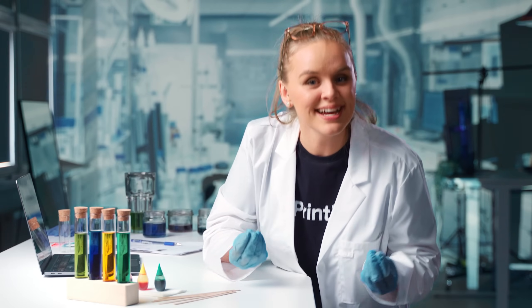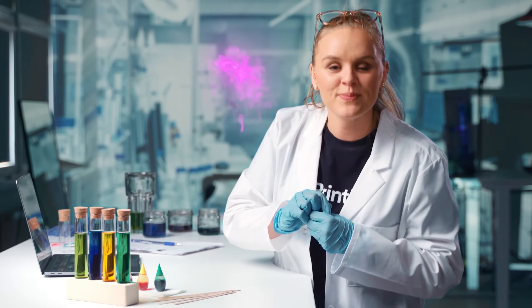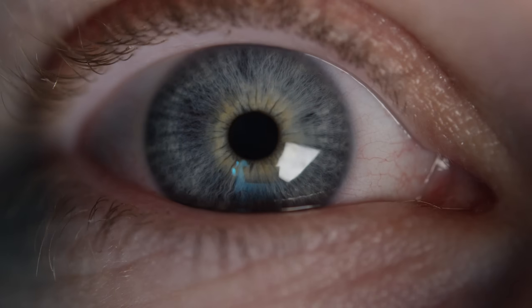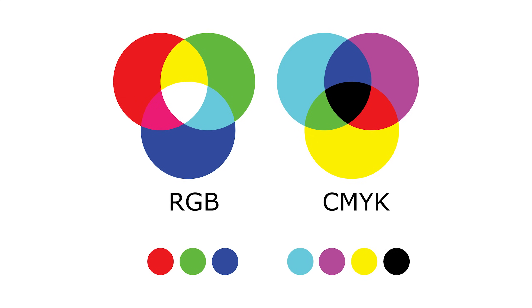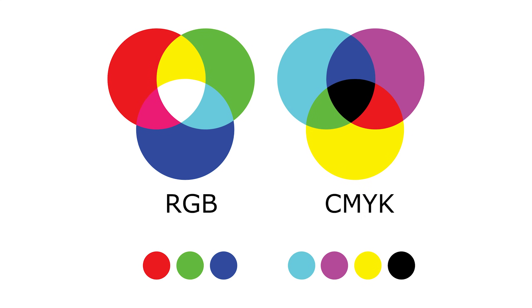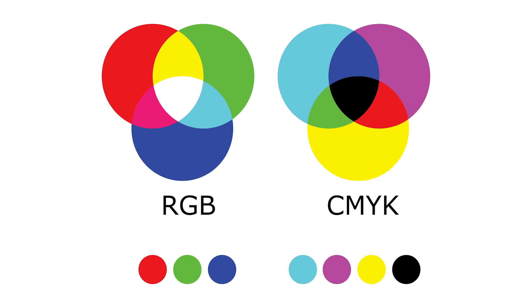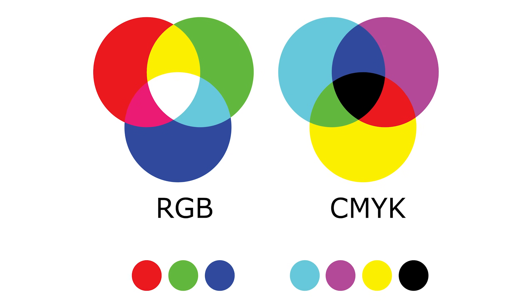Why did my printed product come out differently than I had designed in the first place? To answer this question, we need to get science-y first with some physics. When it comes to color, and especially print colors, humans, computers, and printers view things differently. CMYK and RGB have different color spectrums, meaning that each can achieve colors that aren't possible with the other. If these three perspectives don't line up correctly, an end product's print colors will look different from that same item on a computer screen.